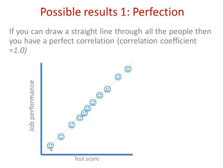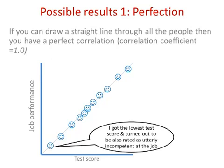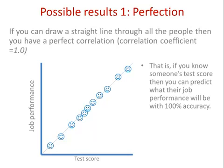They've screwed things up, got everything wrong, and as predicted they go into the real world and electrocute themselves. The person at the top got a high test score and turned out to be superb at the job. The person at the bottom got the lowest test score and turned out to be utterly crap. This is brilliant because it means that if we know someone's test score, we can predict their job performance with 100% accuracy — assuming the job performance rating is itself accurate.